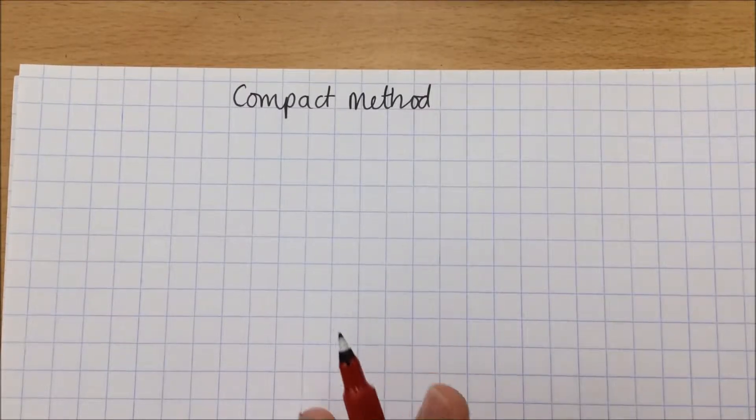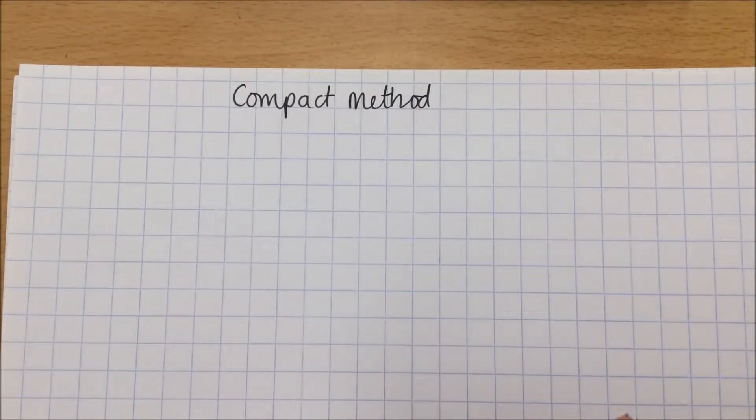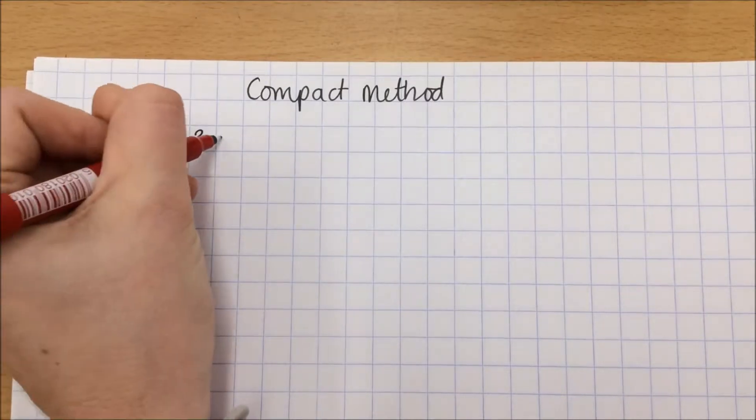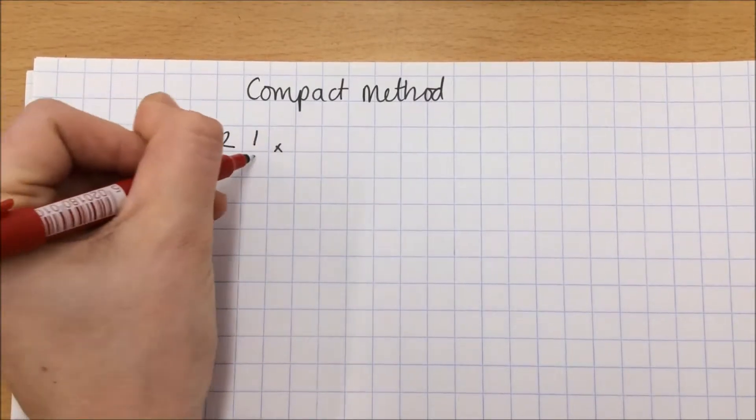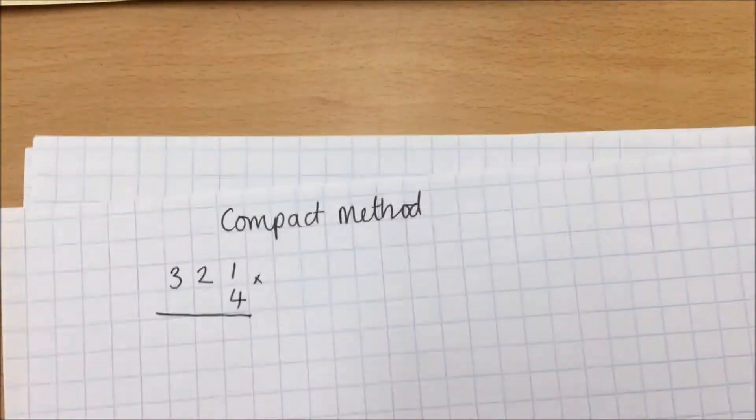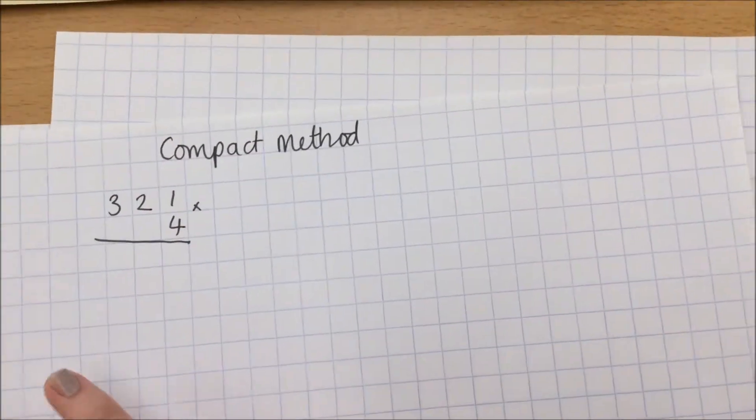It's going to make all their multiplication calculations much quicker. I'm going to multiply as before 321 multiplied by 4, and the difference between the compact method, let me just find the expanded method to have it side by side...